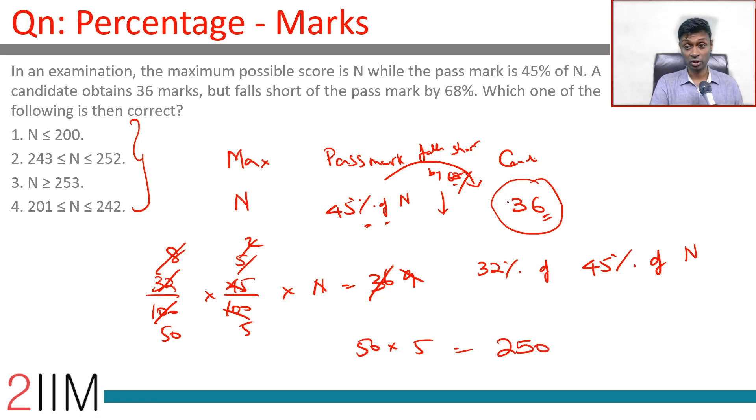N is 250. So, we have got a specific value of N. So, these choices should be much simpler.